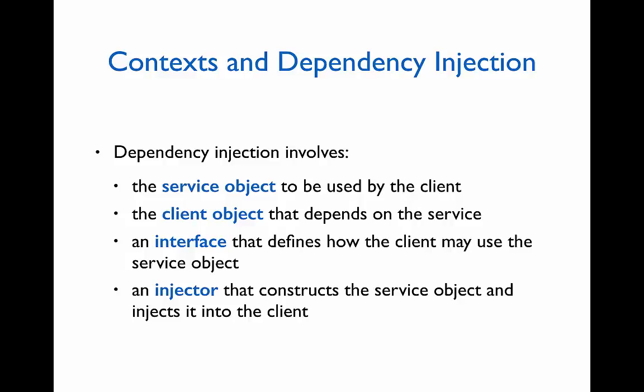Dependency injection refers to the inclusion of a service object into a client object. The idea is that the client object requires a service object with a particular interface, and instead of the client object creating the service object, a third object called an injector manages the creation of the service object and gives it to the client. In this way, the client only needs to specify the interface of the service it needs, without having to worry about the implementation details. Dependency injection therefore adheres to the software engineering principle of dependency inversion, which states that components should depend on abstractions, or interfaces, rather than concretions, or implementations.